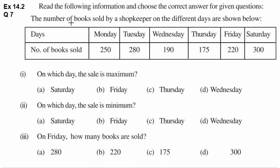The number of books sold by a shopkeeper on the different days are shown below. Yahaan per days kaun se mentioned hai? Monday, Tuesday, Wednesday, Thursday, Friday and Saturday. And each day shopkeeper ne kitni books sell ki hai, woh yahaan per mentioned hai.